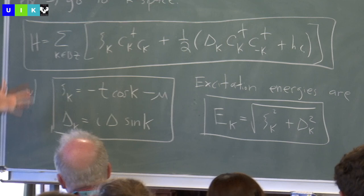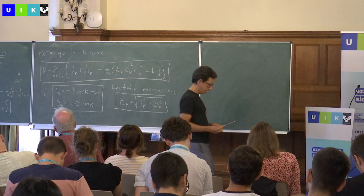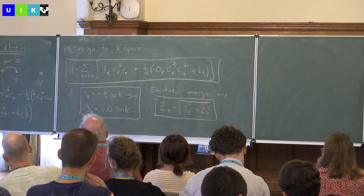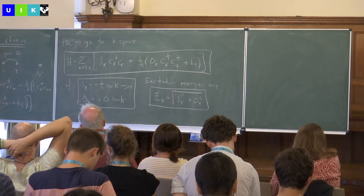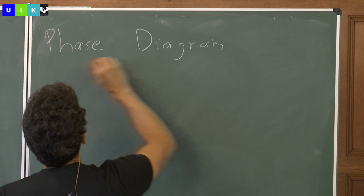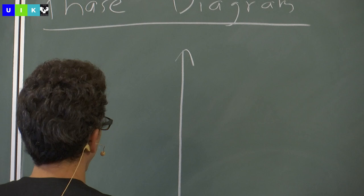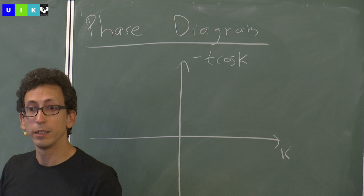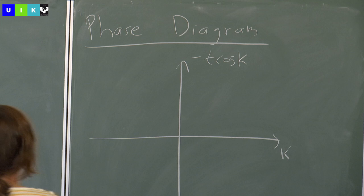This is now enough information to deduce the structure of the phase diagram as a function of chemical potential divided by the tunneling energy. To do this, I'm going to start by just plotting the band energy across the 1D Brillouin zone. The band energies are just minus T·cosine(k) — just the usual cosine form over the Brillouin zone from minus pi to pi.